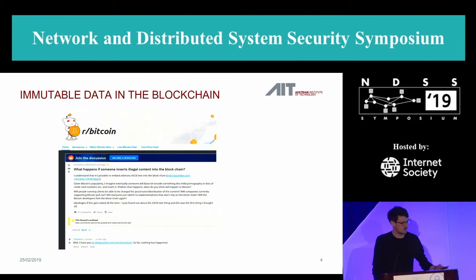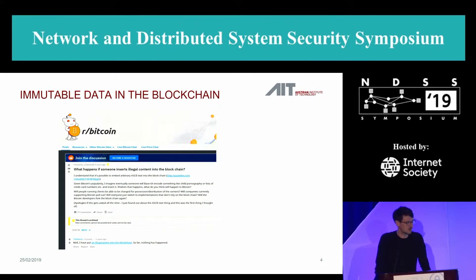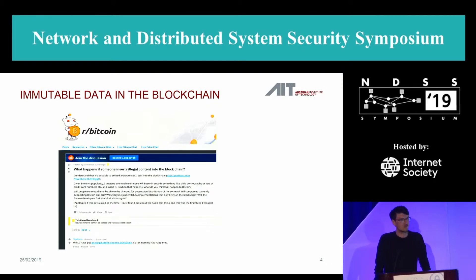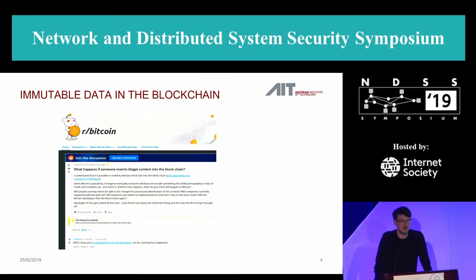Let me motivate this from a practical point of view. Five years ago, someone wrote on Reddit: what happens if someone inserts illegal content into the blockchain? One answer was: someone put an illegal prime number on the blockchain. An illegal number is a number you are not allowed to possess or distribute because it can get you into legal trouble in some countries. Now it's on the blockchain, which is distributed on many computers — so what does it mean to possess this illegal prime on your computer?